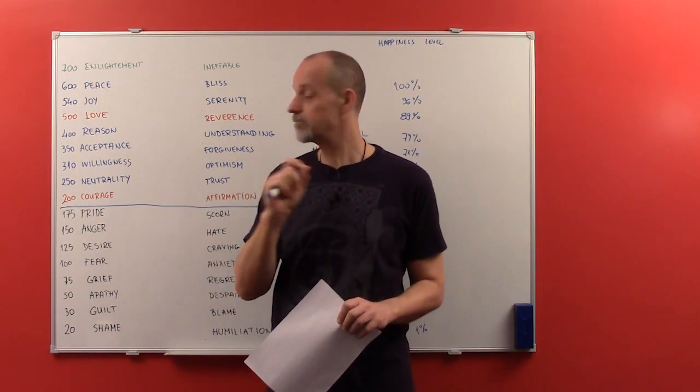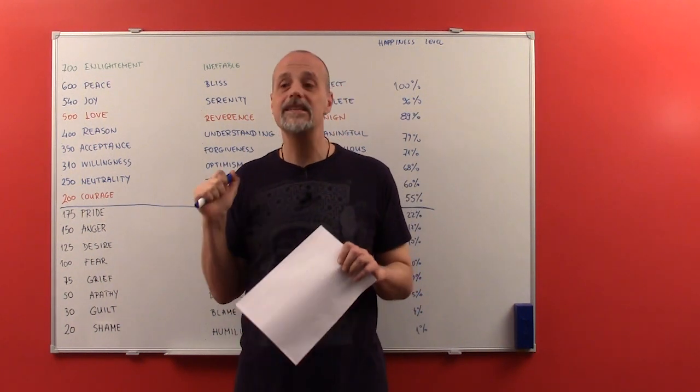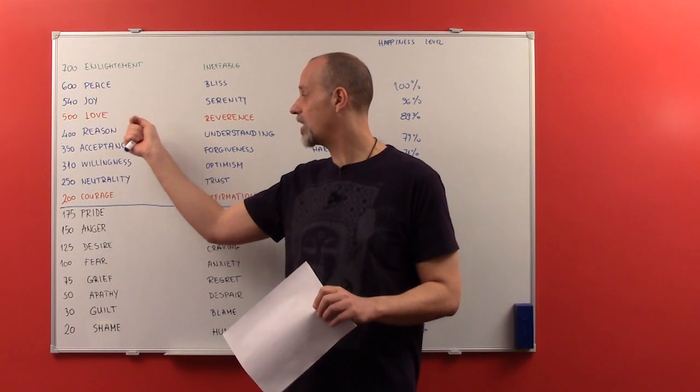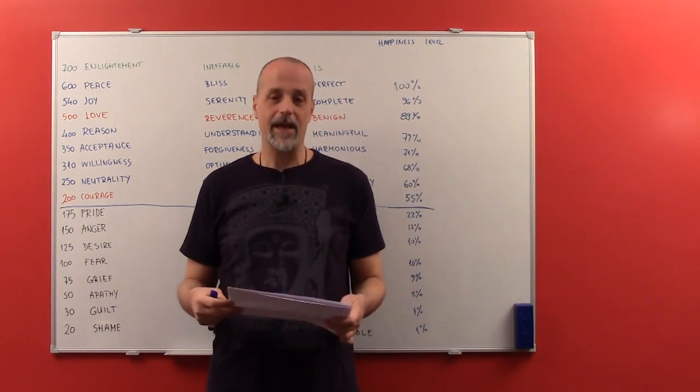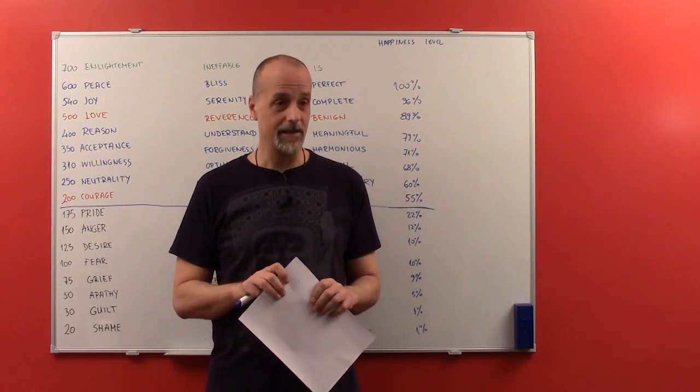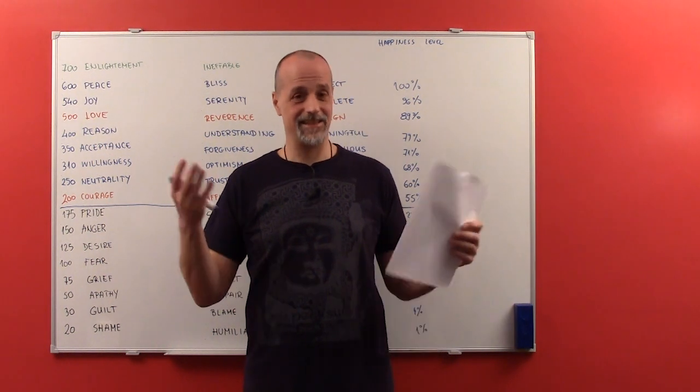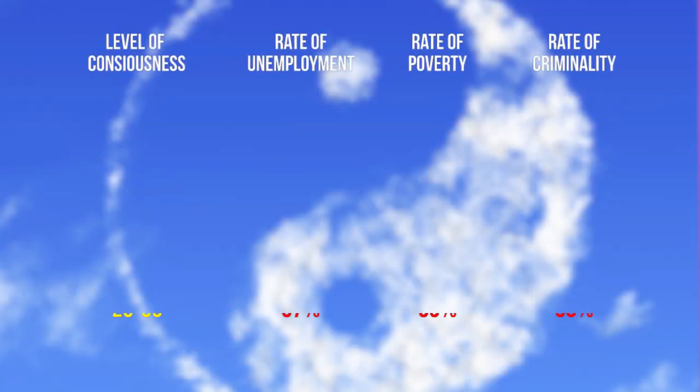And society at large changes dramatically when it crosses this threshold. Actually, it changes dramatically with each and every point that it is lifted during time. So, for example, when society at large is on the level of consciousness below 50, the rate of unemployment is 97%. Rate of poverty is 65%. And the rate of criminality is 98%. So, when society is somewhere here in guilt, shame, apathy. But, even below the threshold of 200, when society is between 100 and 200, rate of unemployment falls to 50%. And the rate of criminality is also 50%. And the rate of poverty is 22%. When you cross the threshold of 200, rate of unemployment falls to 8%. Rate of criminality to 9%. And for a society at large, that's between 400 and 500, rate of unemployment is about 2%. Rate of criminality is about 2%. And rate of poverty is 0.5%.